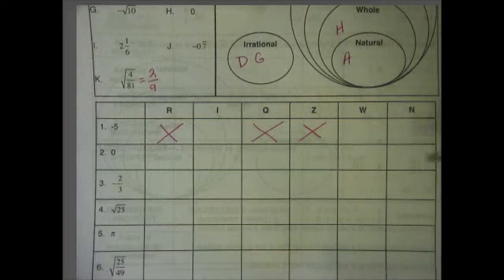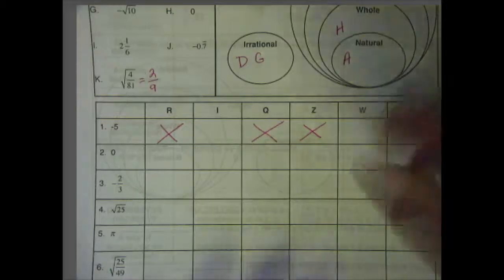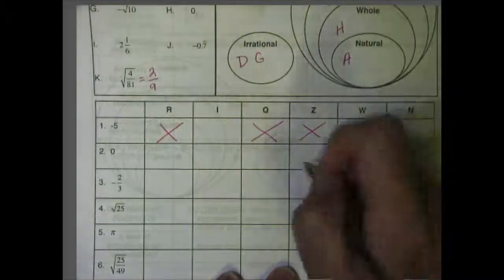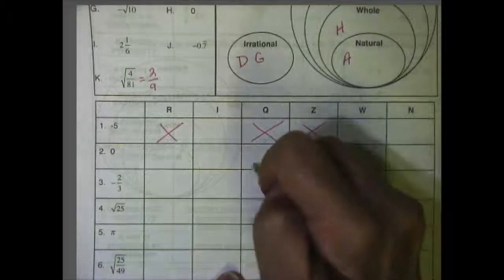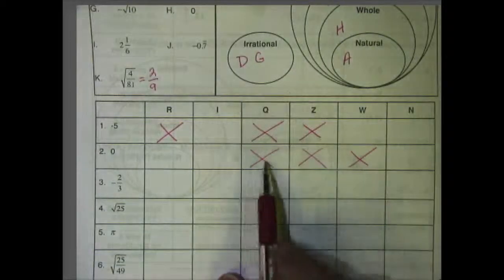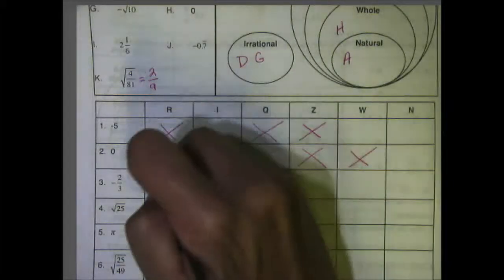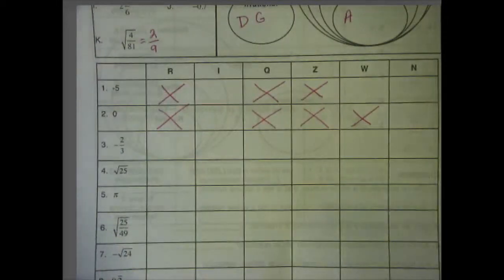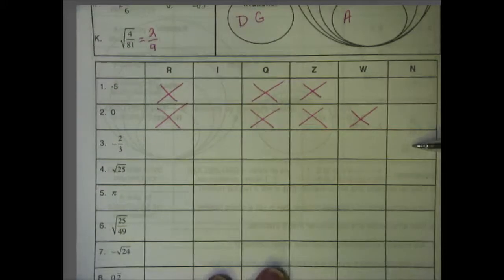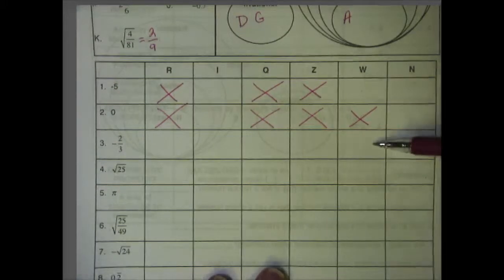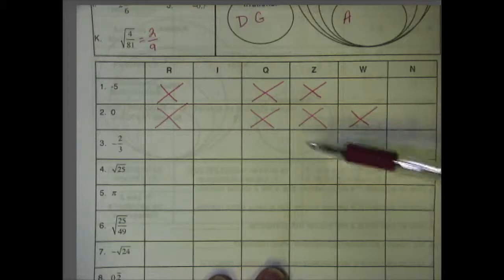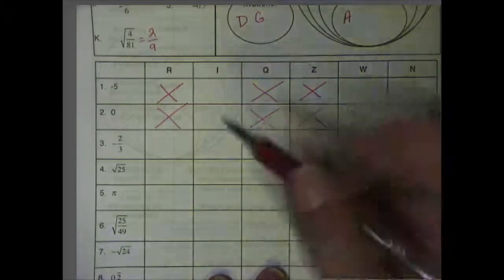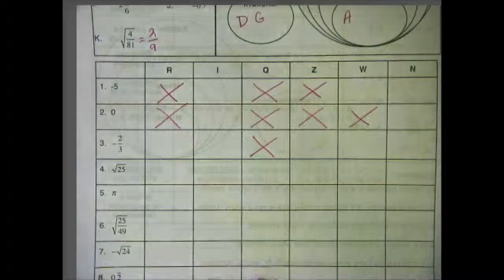Number 2 is zero. Natural does not include zero, but whole does. Integers include zero, and then rational includes zero. Remember, if it's rational, it can't be irrational, but it is definitely real. Number 3 is negative 2 over 3, or negative two-thirds. Natural does not include fractions, whole does not include fractions, integers does not include fractions, but rational numbers do include fractions — so it's going to be rational and real.